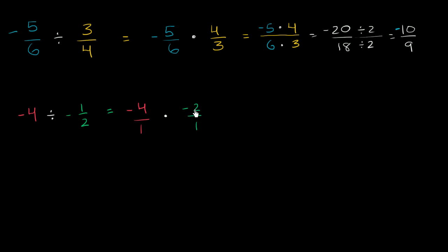You could view it as negative 2 over 1. Or you could use it as positive 2 over negative 1. Or you could use it as negative 2. Either way, these are all the same value. And now we're ready to multiply. Notice, all I did here, I rewrote the negative 4 just as negative 4 over 1. Negative 4 divided by 1 is negative 4.